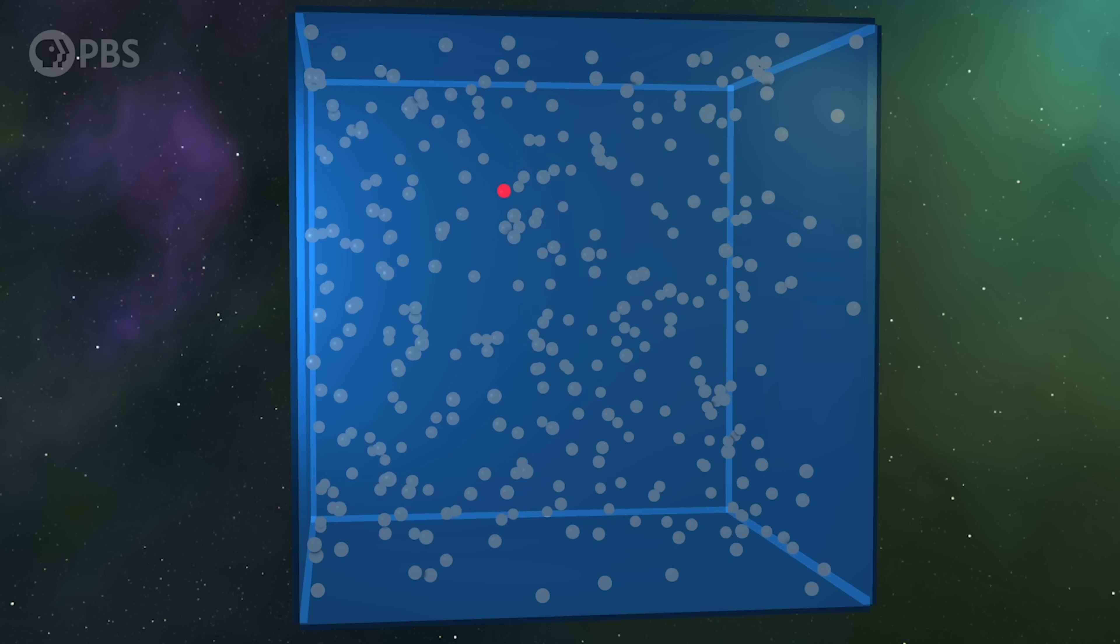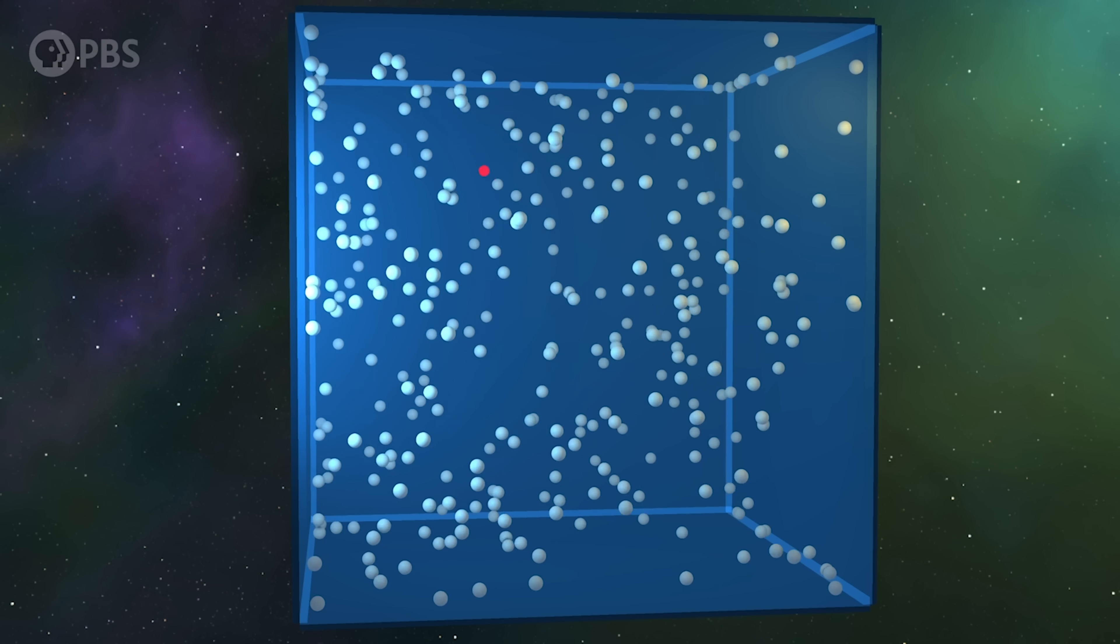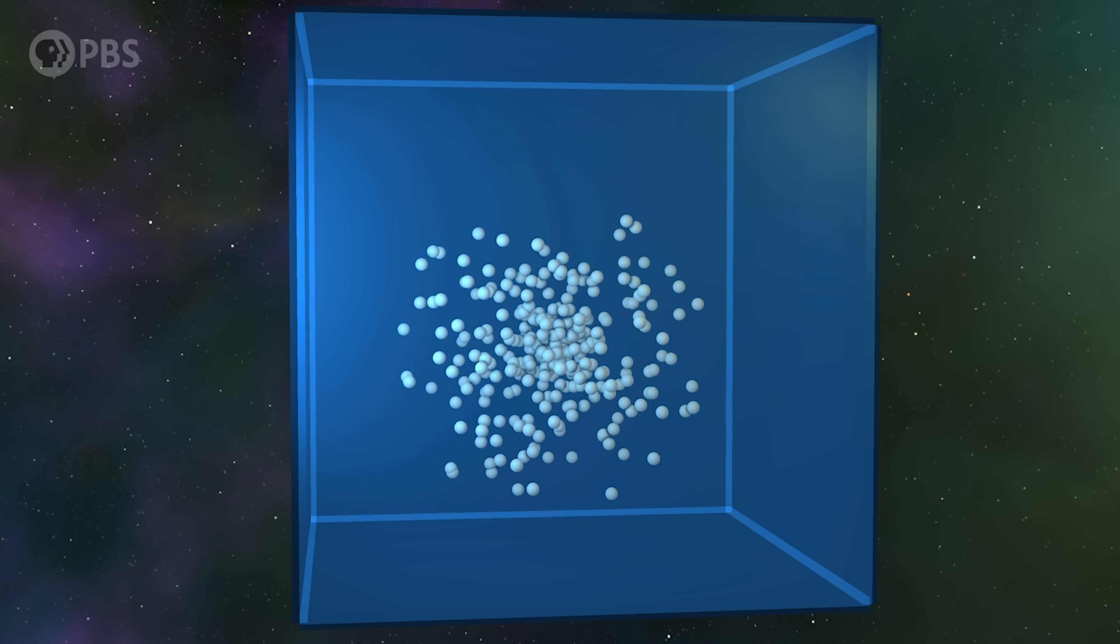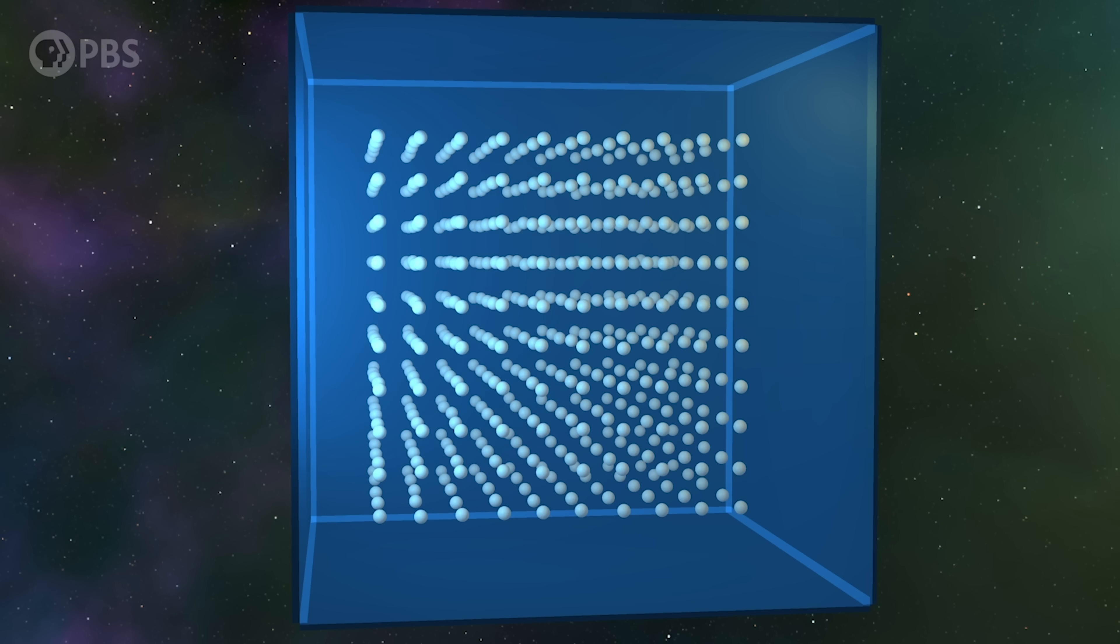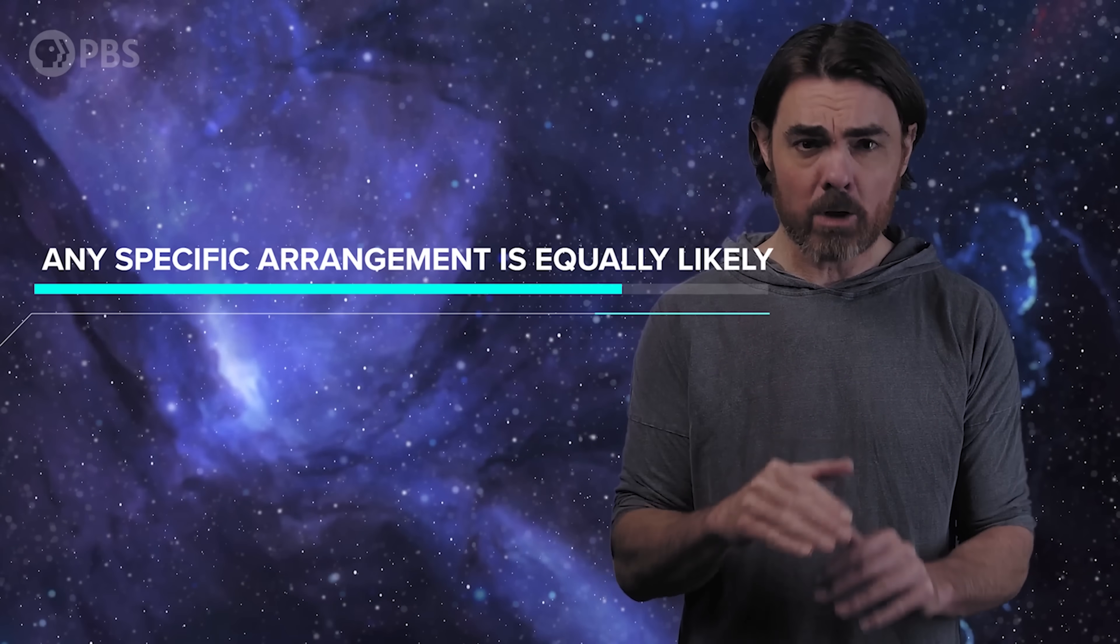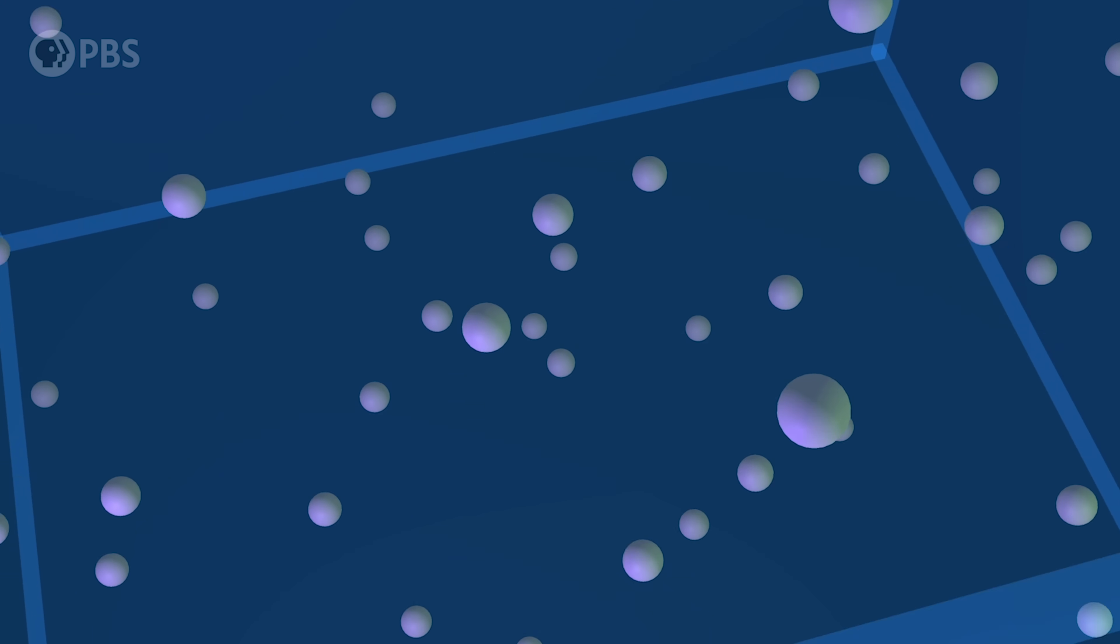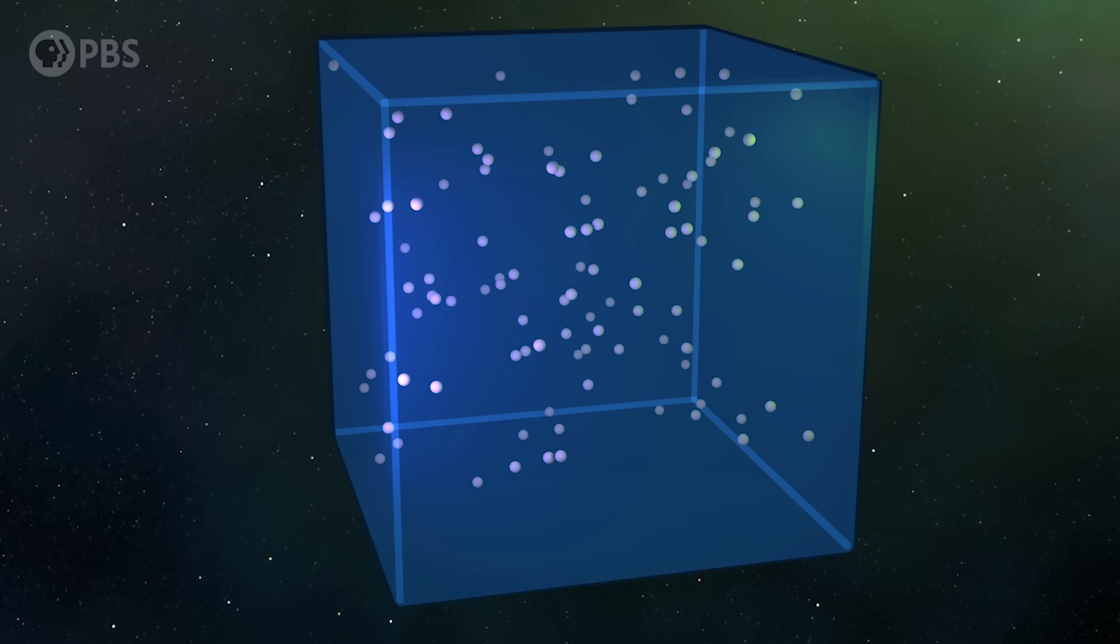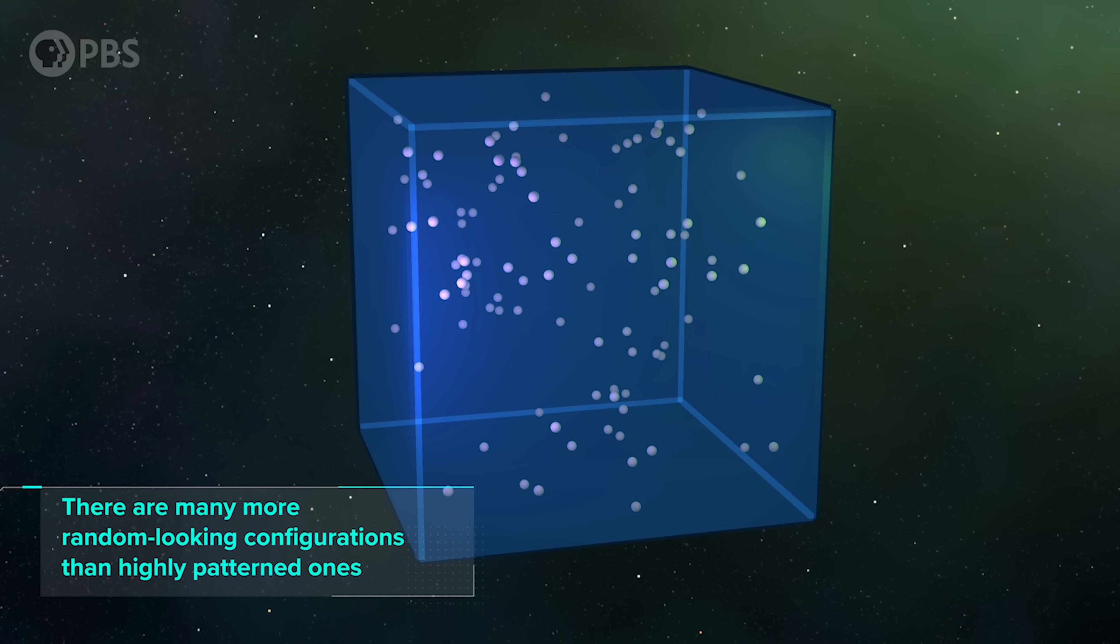But that also means that each configuration of locations for all a hundred balls is equally likely. They could, by chance, all hit you in the head at the same time. Or maybe they line up in a perfect lattice. Or they could be haphazardly scattered through the room with no obvious pattern. That last one seems more natural, but actually, any specific arrangement of balls is equally likely. The reason we're more likely to see a random-looking configuration is just that there are so many more room-filling, random-looking configurations than there are highly patterned ones.